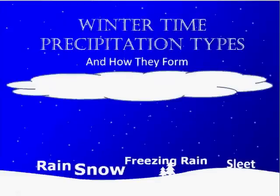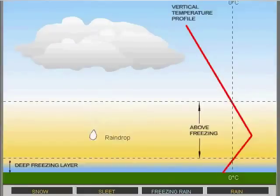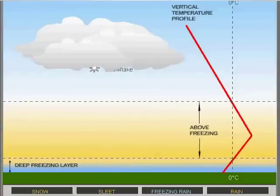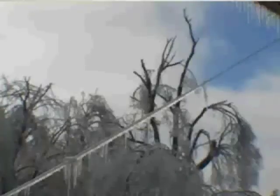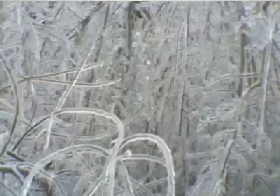Freezing rain forms when an ice crystal encounters a layer of warm air above the surface and melts, becoming a raindrop. The raindrop remains in a liquid state until it encounters a freezing object at the surface. If the layer of cold air near the surface is deep enough for the drop to refreeze, then sleet will follow. However, if the layer of sub-freezing air at the surface is not deep enough for the raindrop to freeze, it will remain liquid, then freeze to whatever object it encounters. When a large amount of ice accumulates on the surface, the National Weather Service will designate the event an ice storm.